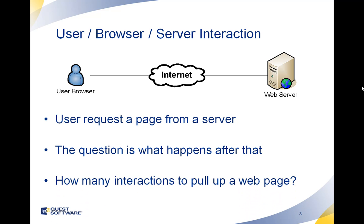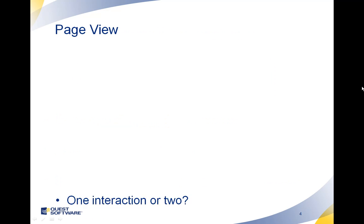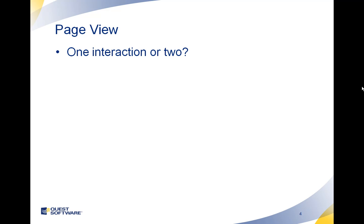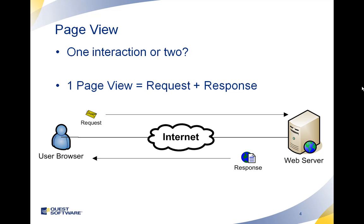So let's start with a simple question: how many interactions does it take to pull up a web page? A page view — is it one interaction or is it two interactions? A page is actually a request and a response, so it's what we call two interactions. The request gets fired from the user's browser to the web server, and the web server responds with some page that was requested. So your answer is two interactions.